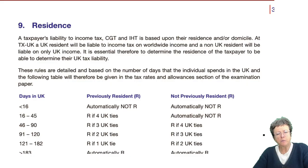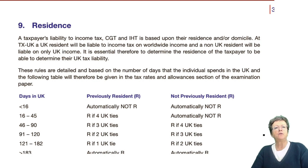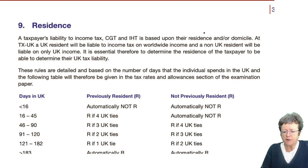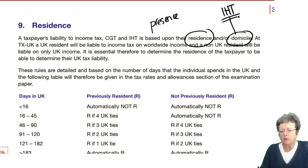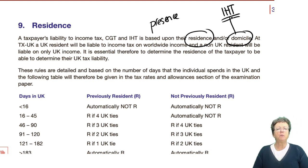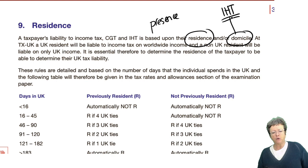The final part of this chapter is about residence. An individual will pay certain taxes in the UK based on their residence and their domicile. Residence is about their presence — are they present in the UK? Domicile is more complicated; when we get to inheritance tax we'll explain it differently. It has more to do with your parentage and where you were born, not so much where you live. Your liability to income tax, capital gains, and inheritance tax is based upon your residence.